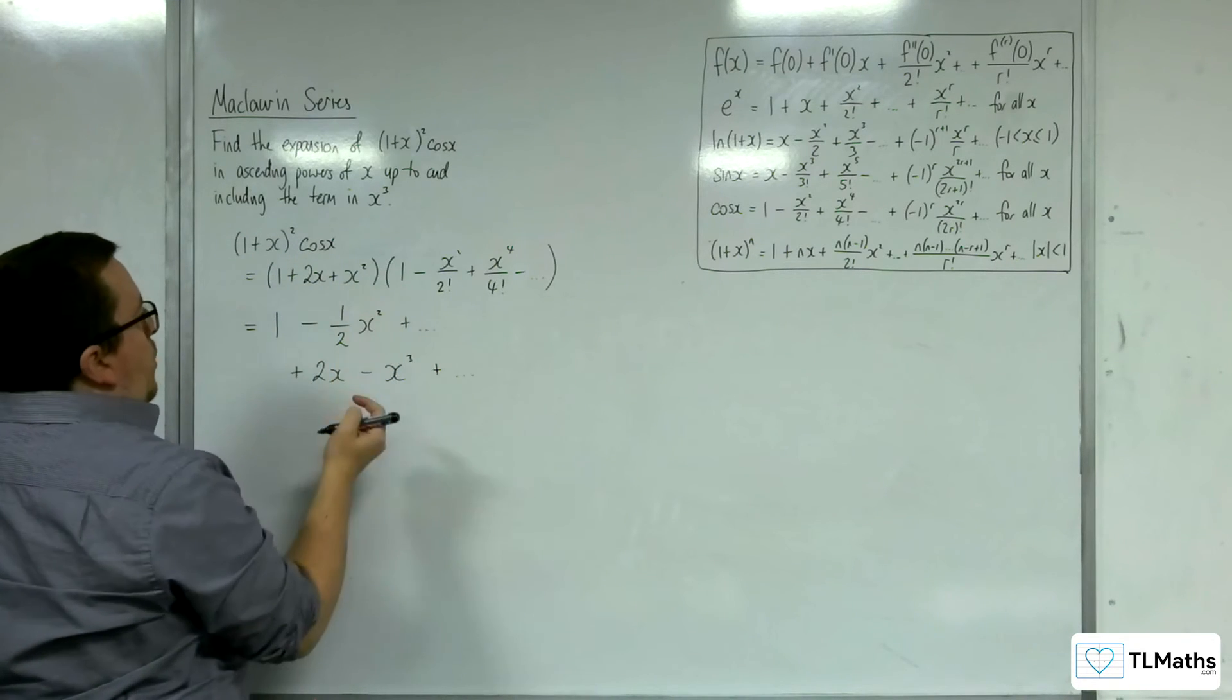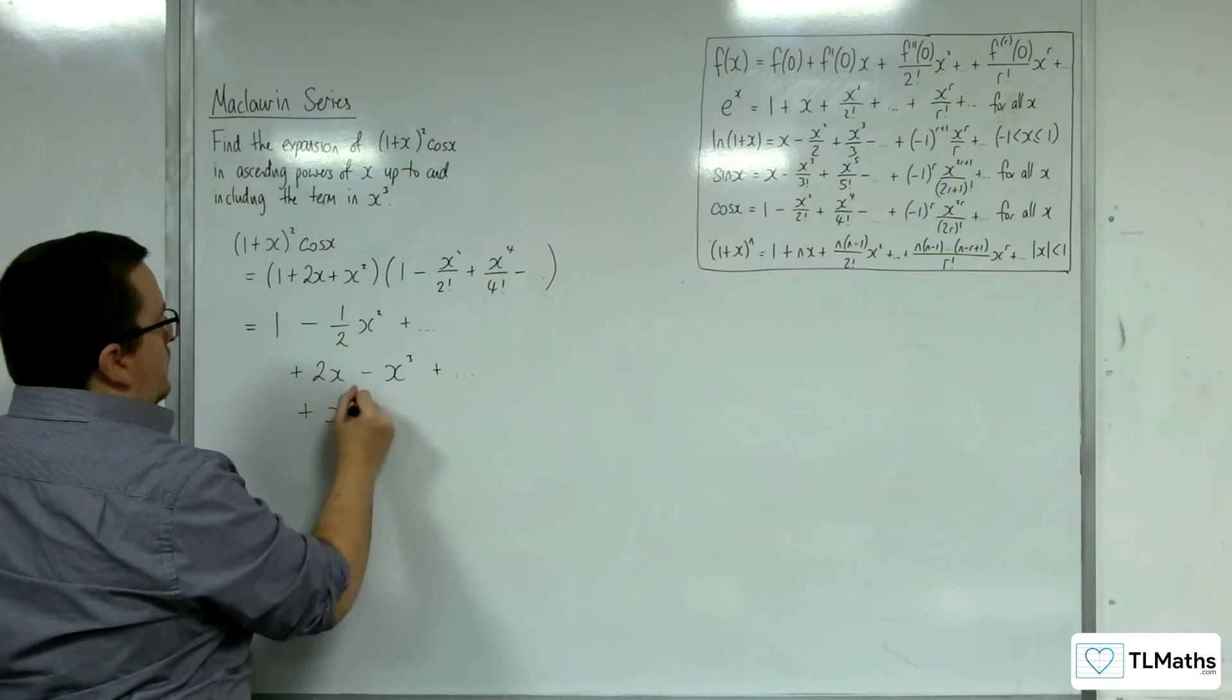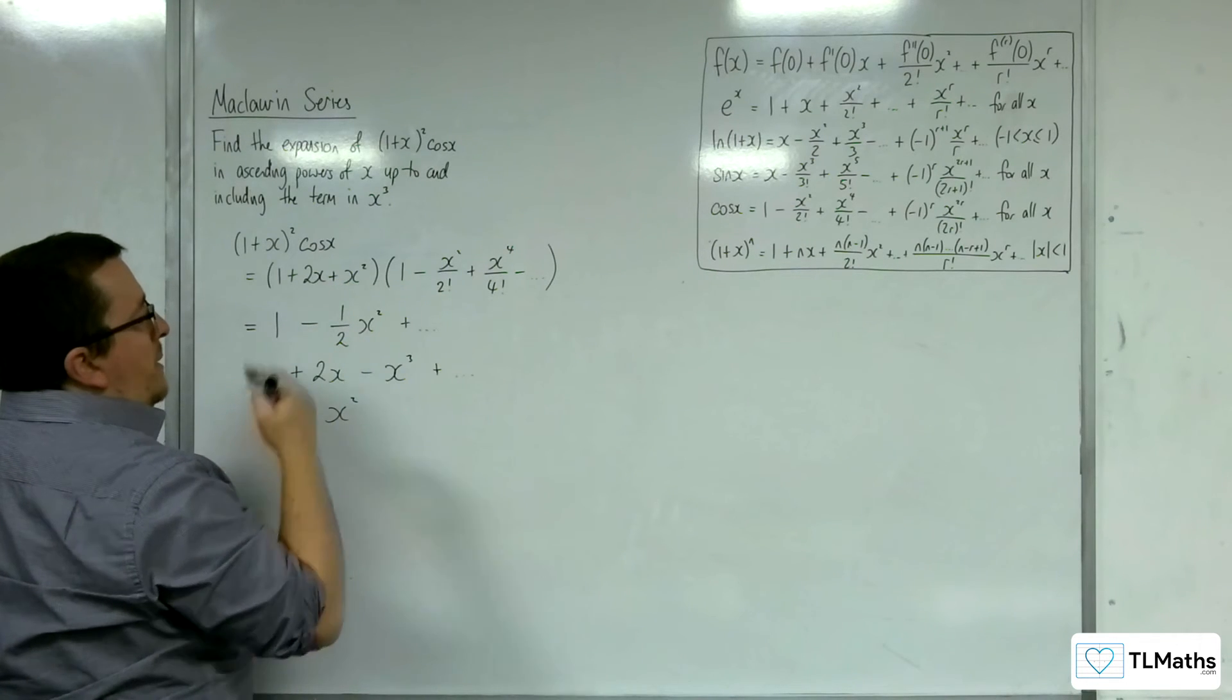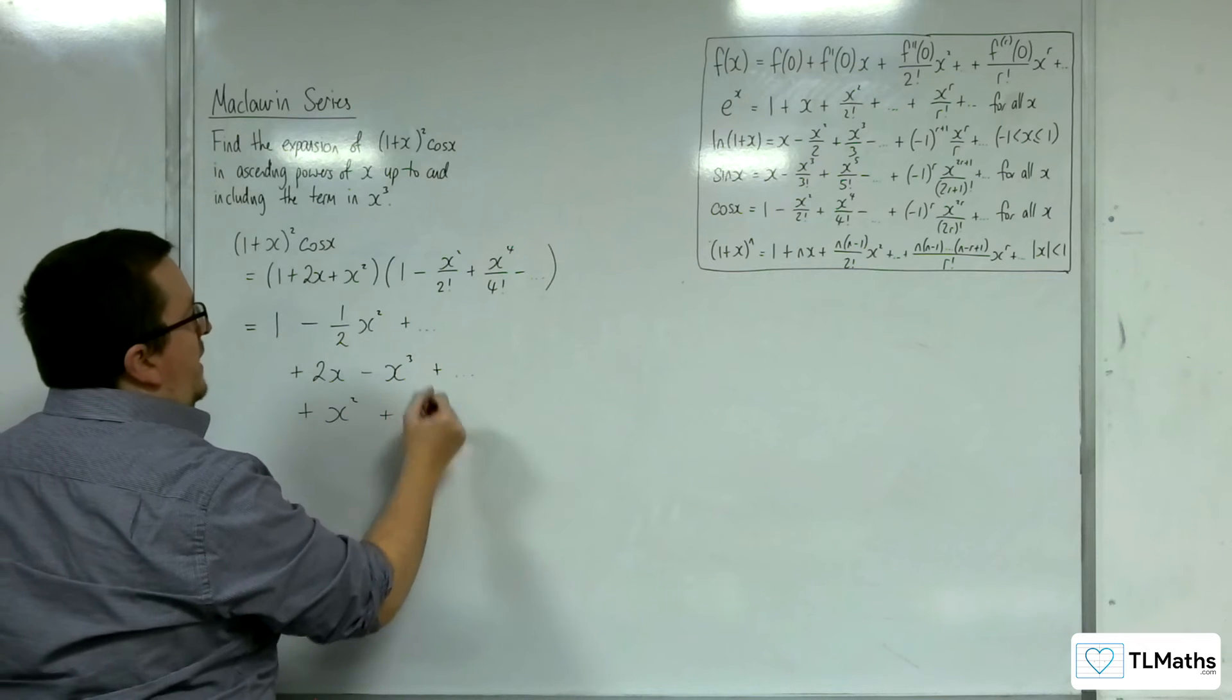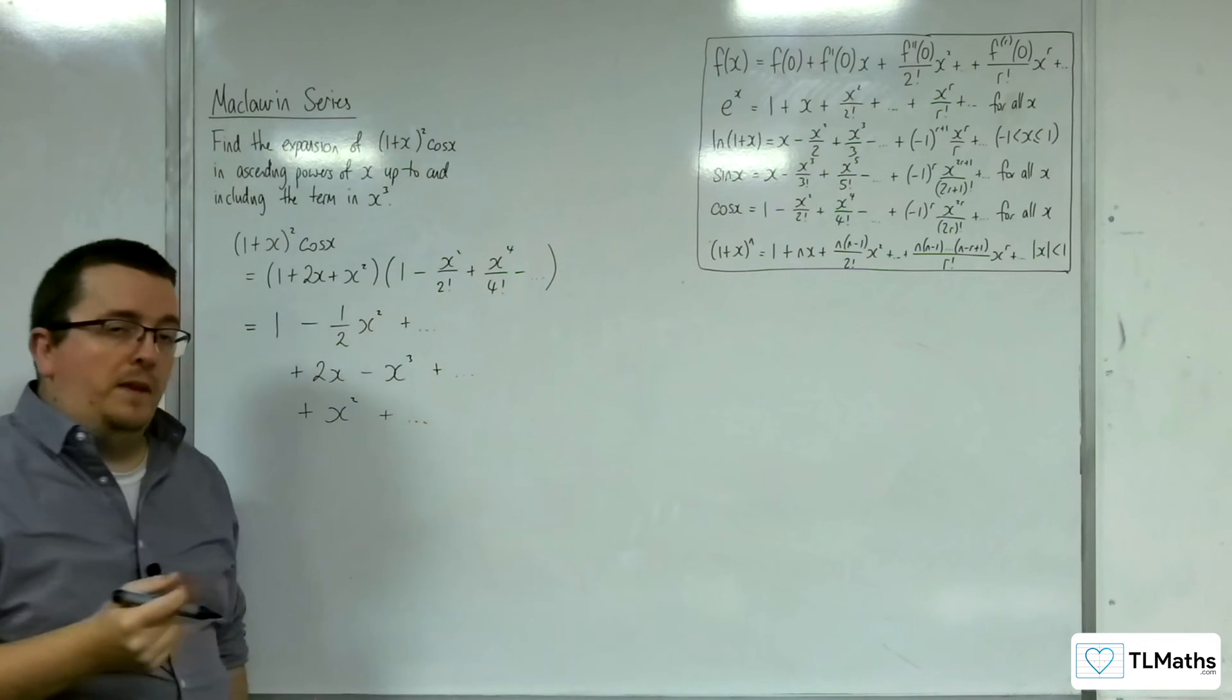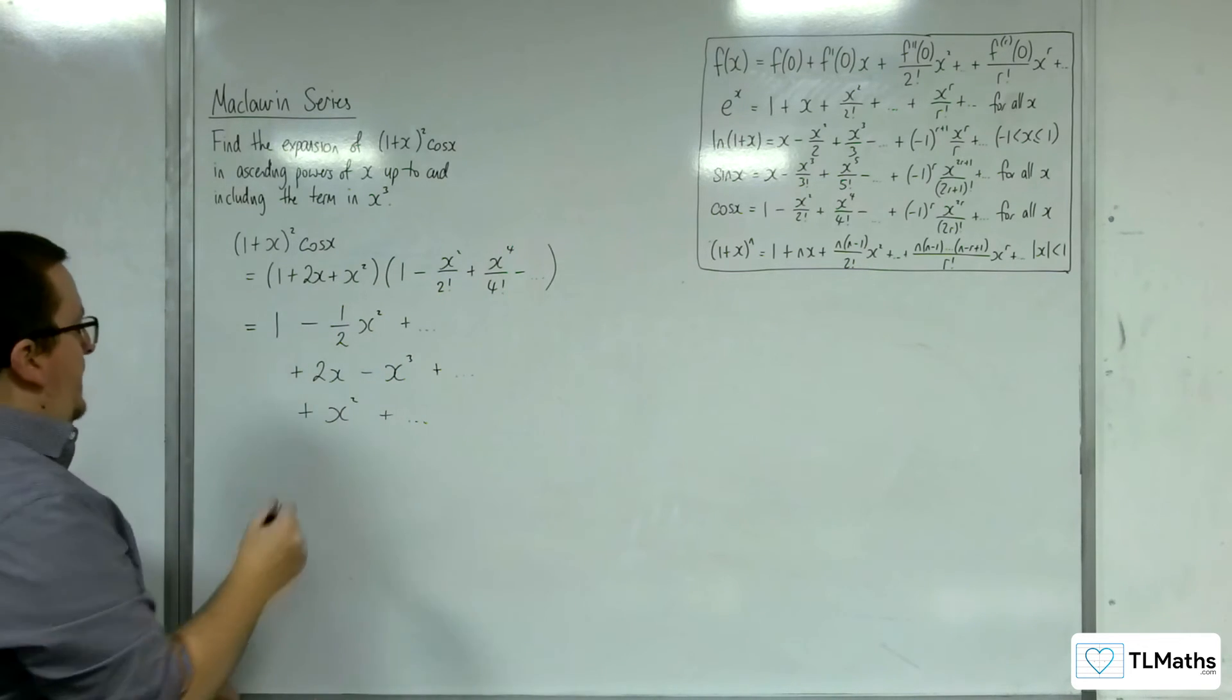Then x squared times 1. And then x squared times this term will get me an x to the 4. I'm not interested in that, and I'm not interested in an x to the 6 either. So these are the terms I need to consider.